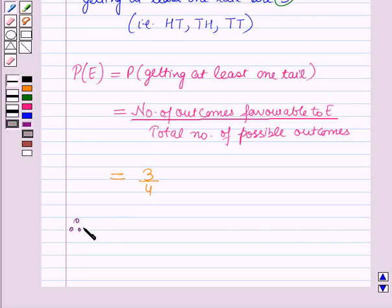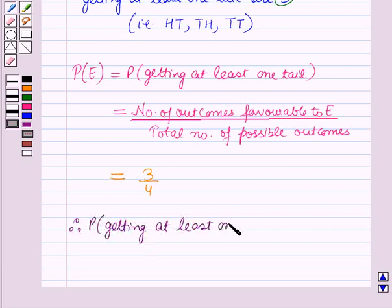Therefore, the probability of getting at least one tail is equal to three by four. So this is the solution of the given question and that's all for this session. Hope you all have enjoyed the session. Thank you.